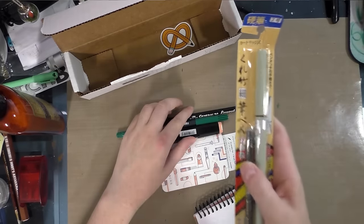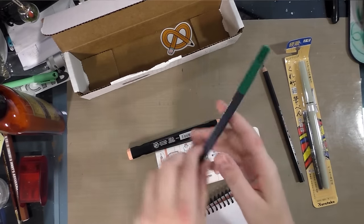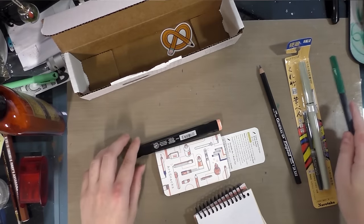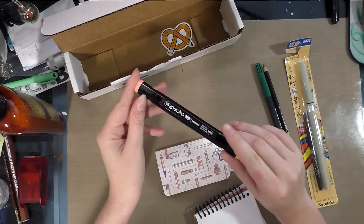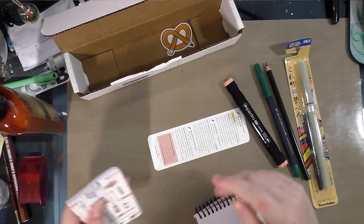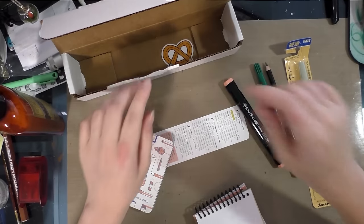This month I received a Kuretake No. 7, a Generals Layout Pencil, a Fibralo Caran d'Ache Fibralo Brush Water-Based Marker, a Spectra AD Marker (these are alcohol based), and a Denik Mini Notebook, as well as a Lifesaver which I ate, my card, and my sticker.